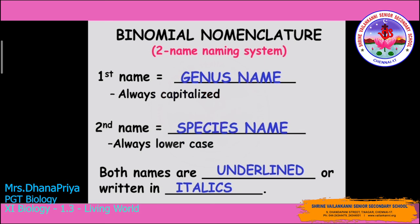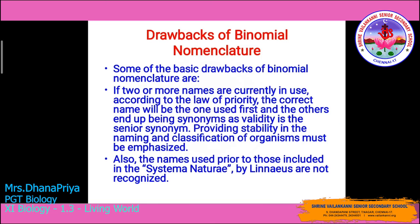Binomial nomenclature is very important to understand. However, it also has some drawbacks. If two or more names are currently in use, according to the law of priority, the name used first is the current name and others become synonyms. Validity belongs to the senior synonym, providing stability in the naming and classification of organisms. Additionally, names used prior to those included in Linnaeus's System of Nature are not recognized.